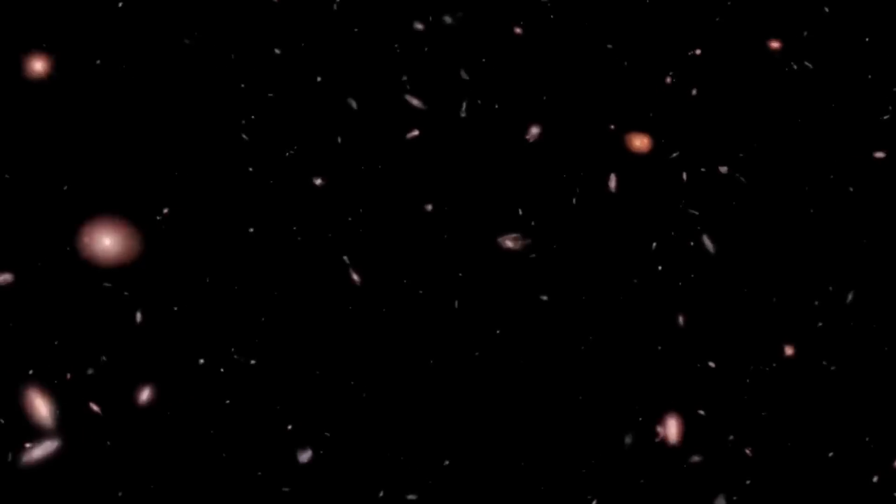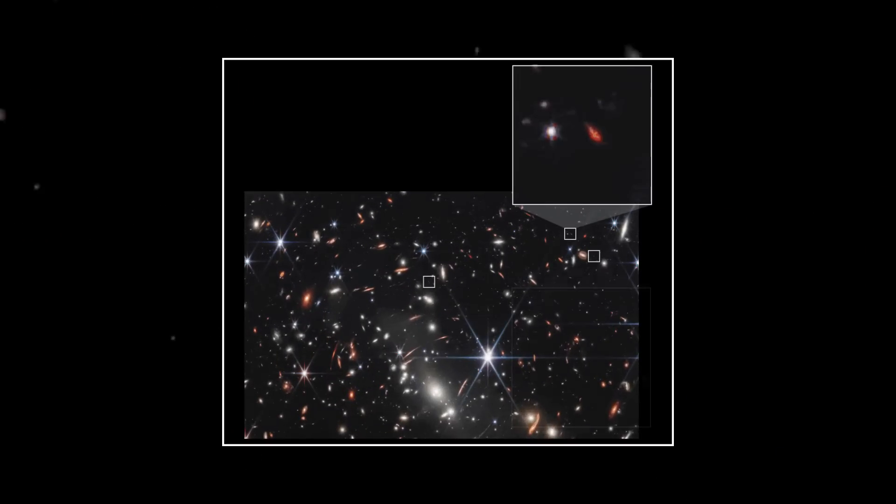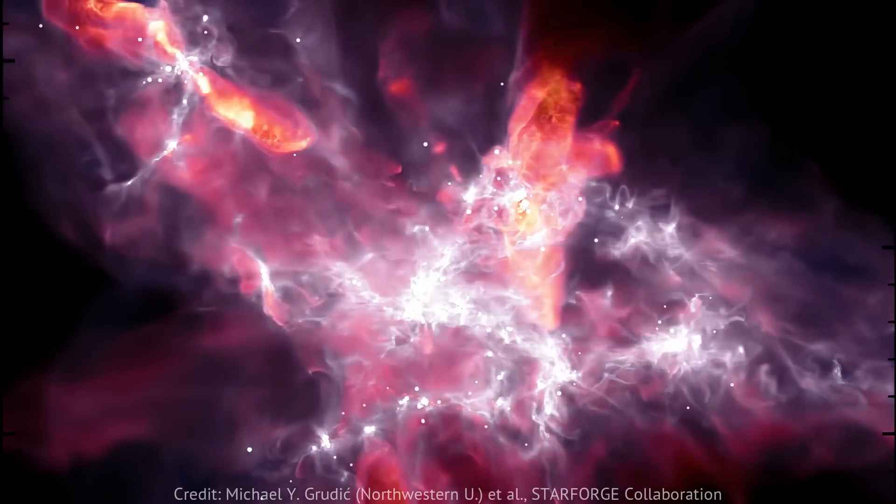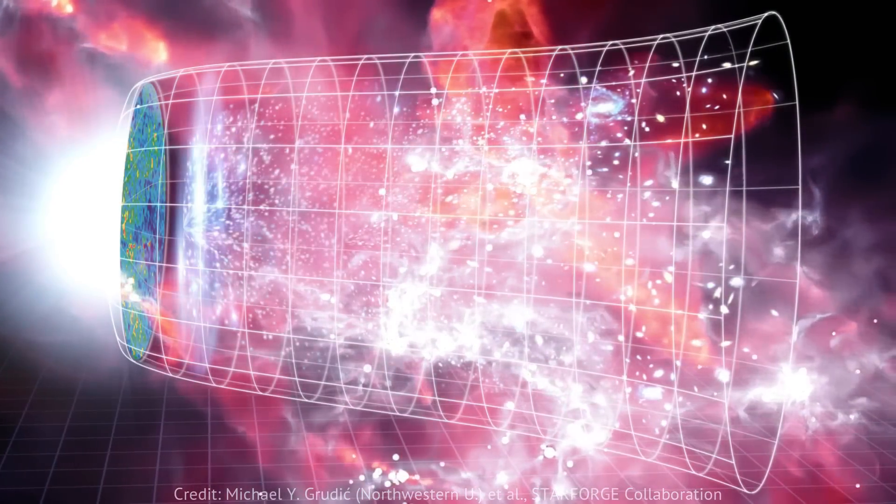But MACS0647-JD is also incredibly bright. Normally, galaxies this early in the universe should be faint and hard to detect. Not this one. MACS0647-JD is bursting with newborn stars, a rapid-fire stellar nursery, in the first few chapters of cosmic history.